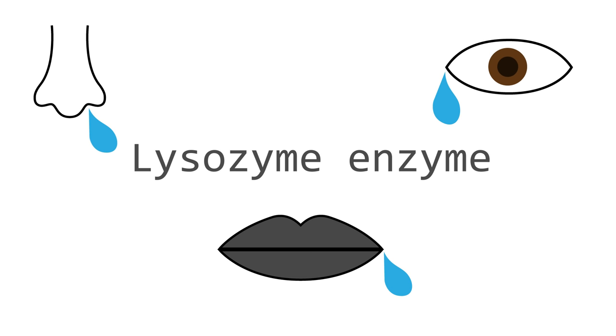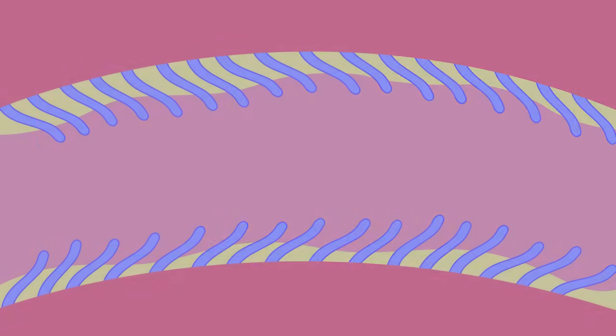Our respiratory system has many lines of defense, as well as the enzymes. Firstly, nasal hair keeps out dust and larger organisms. And then for the sneakier microbes that get through, there's a sticky mucus which traps them, and little hairs called cilia to sweep out the dirty mucus.